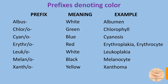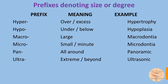'Erythro' means red, as in erythroplakia and erythrocyte. 'Leuco' means white, as in leukoplakia. 'Melano' means black — melanocyte, melanoma, melanosis. 'Xantho' means yellow — xanthoma.